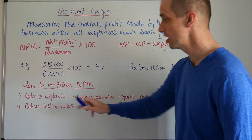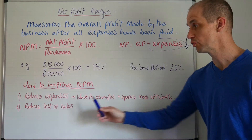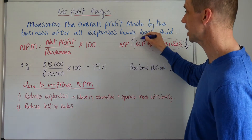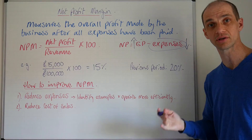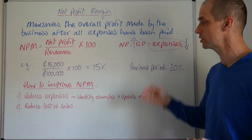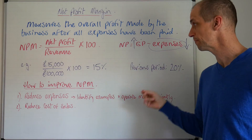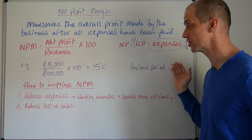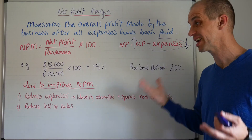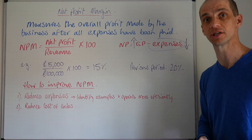Secondly, the alternative is that you look to reduce your cost of sales, which would increase your gross profit. But if your gross profit remains consistent across different periods and it's only the net profit that has really changed, that clearly tells you the problem is expenses.